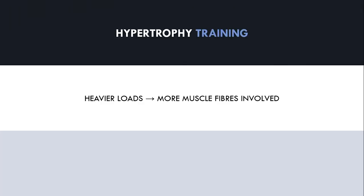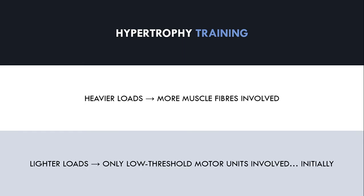So what does all this mean when we apply it to hypertrophy training? Essentially, this means that when we lift a heavier load, more motor units are recruited since force demands are higher. If we lift lighter loads, only the low threshold motor units will be recruited initially since force demands are lower. It also means that the closer to failure we get, the more muscle fibers that will be recruited to lift the weight.